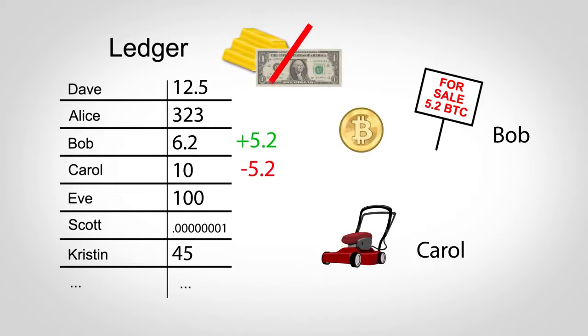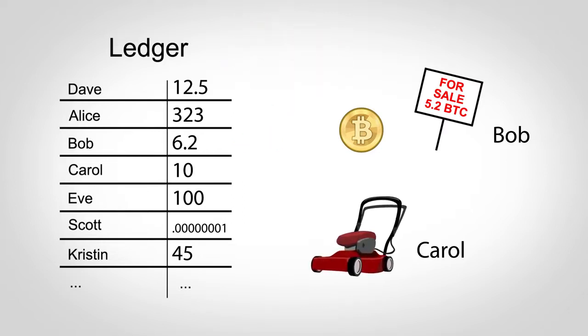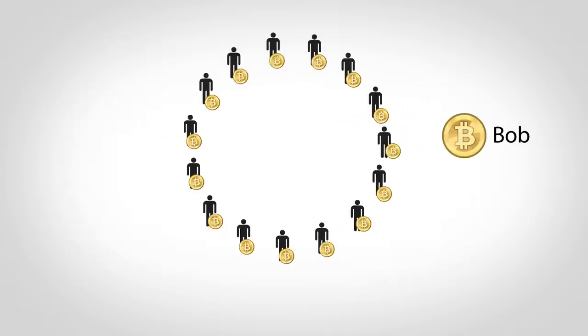There's no gold or government-issued money backing these numbers. Bob is only willing to trade his real-life lawnmower for a higher number in this digital file because he has faith that other people will also trust the system.